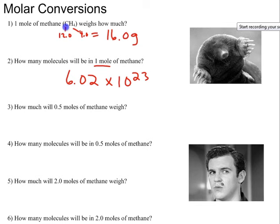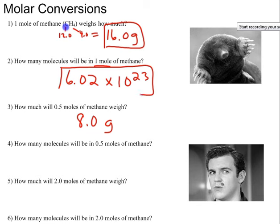So now the question is, what if you don't have one mole of methane? What if you have half of a mole of methane? How much will it weigh? One mole of methane weighed 16 grams, so half of a mole will weigh 8 grams. Question number four says, how many molecules will there be in half of a mole of methane? One mole of methane had 6.02 times 10 to the 23 molecules, so half of a mole will have 3.01 times 10 to the 23 molecules.